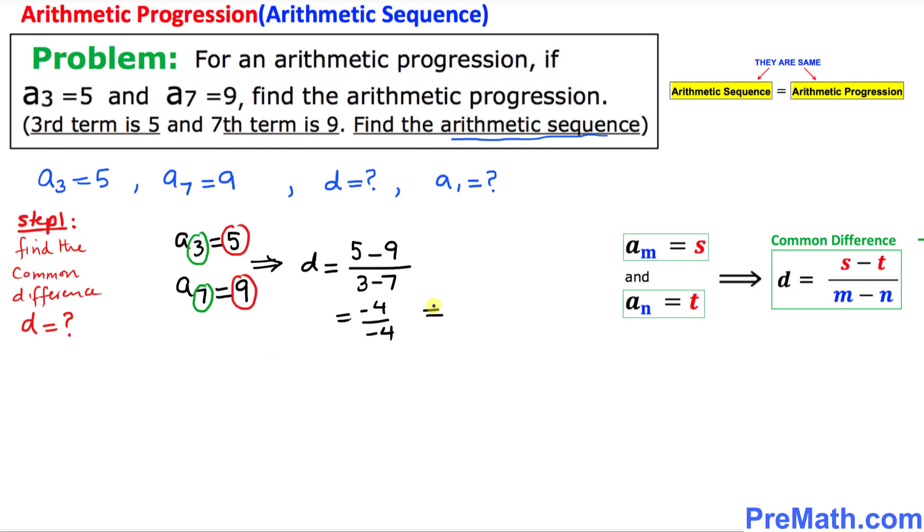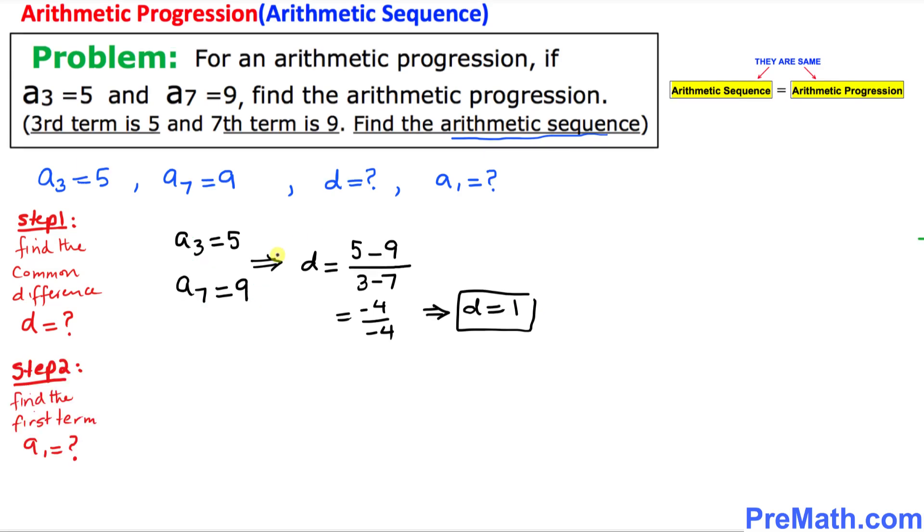That means d turns out to be simply positive 1. And here in our second step, we are going to find the first term a₁. For that, we need to pick one of these two numbers that is given to us.